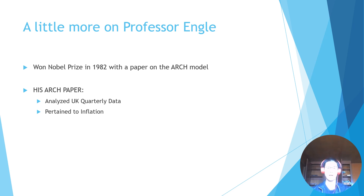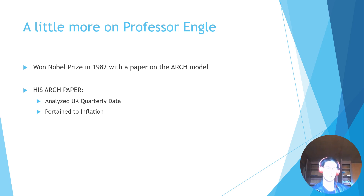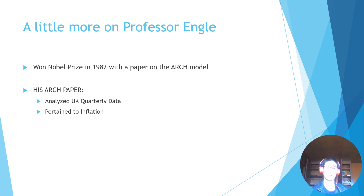Let's talk about Professor Engle. He won a Nobel Prize based on his ARCH model, which is amazing. In his ARCH paper, he did analyze UK quarterly data, which is notable because even though he didn't have mean reversion, he tried to get quarterly data instead of just annual data. He also pertained to inflation, taking account of inflation changes and the shifts of that.